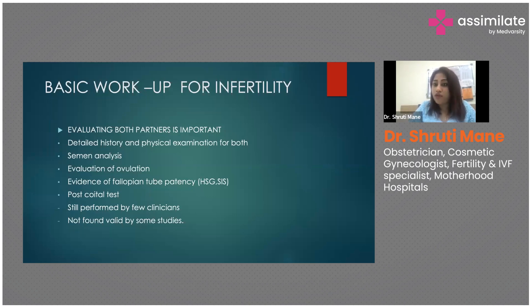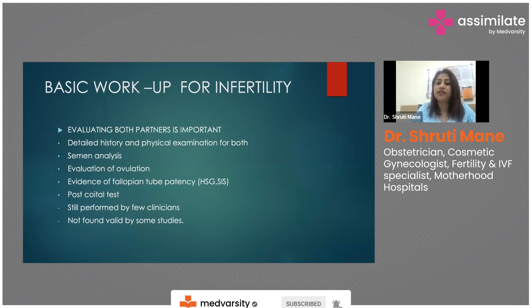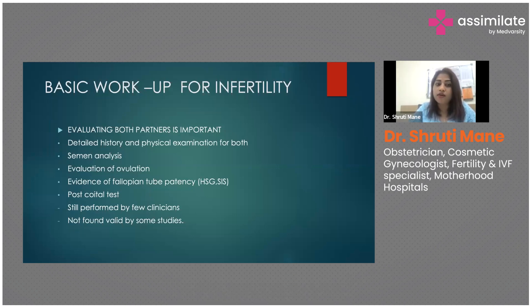You can also perform a follicular study to track and document ovulation. For fallopian tube patency, assessment can be done via hysterosalpingography, saline infusion sonography, or laparohysteroscopy — the latter is recommended for patients with more than two years of infertility.